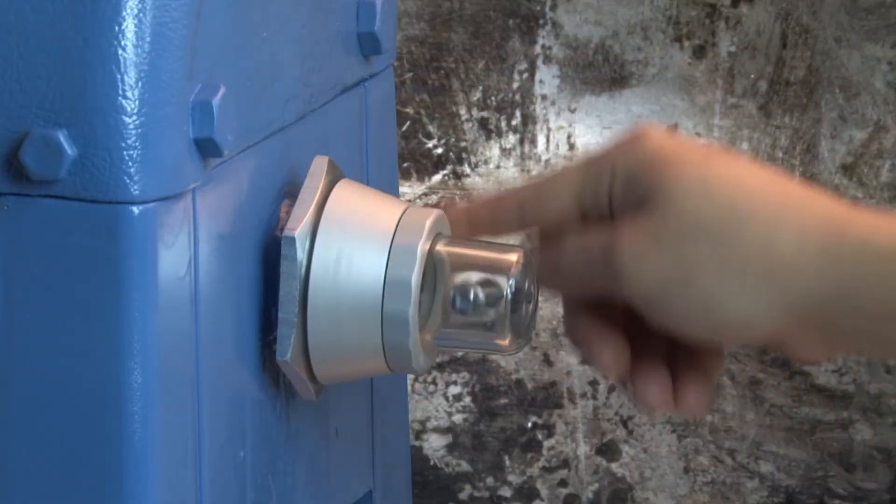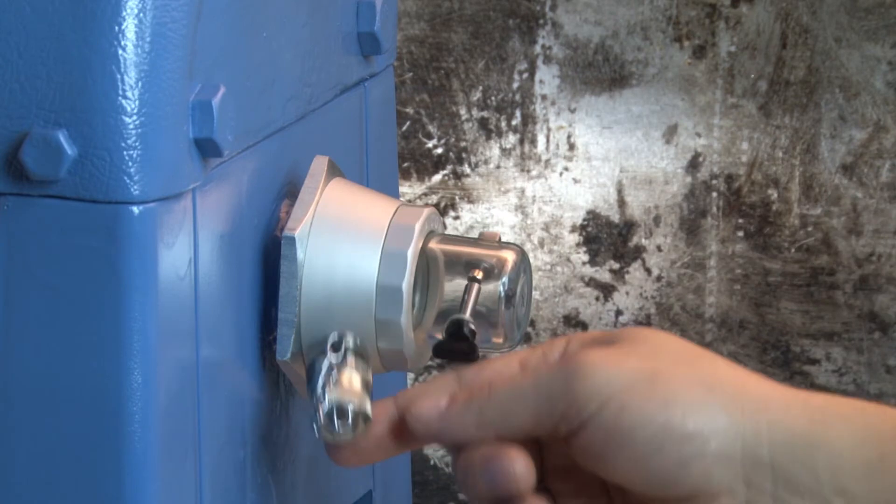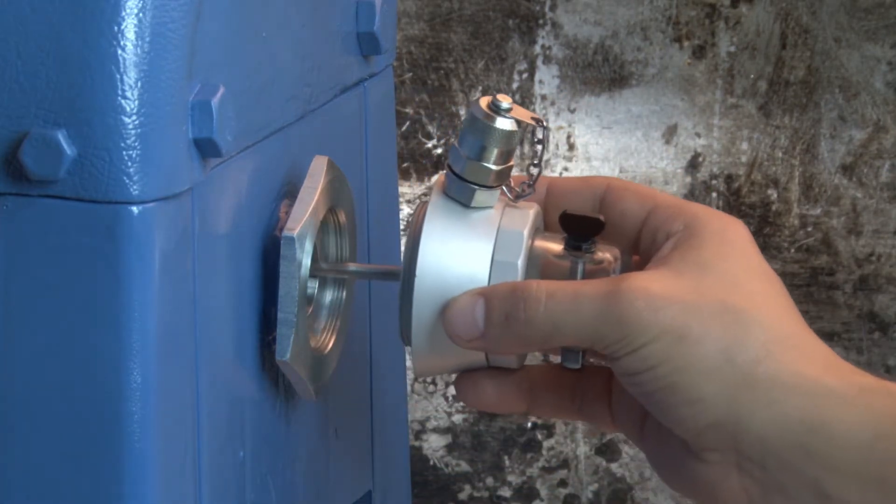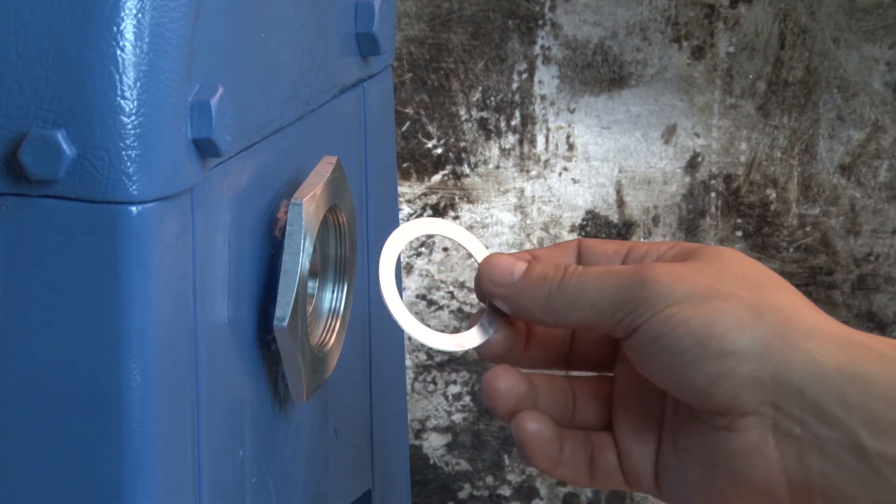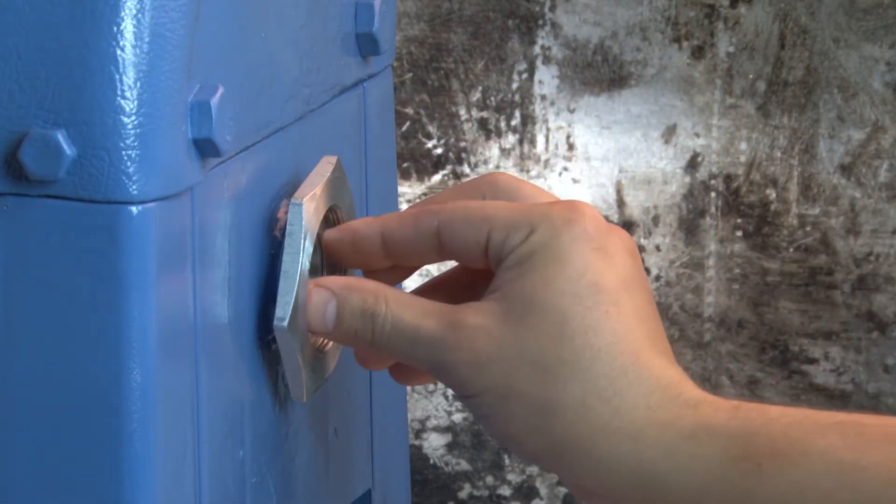Hand thread the CMP into the reducer. If the sampling port is not at a convenient location when fully tightened, use the supplied shims between the reducer and the CMP to reorient the sampling port. For this demonstration, the sampling port will be installed facing upward.